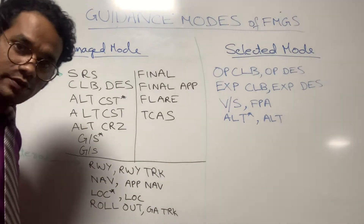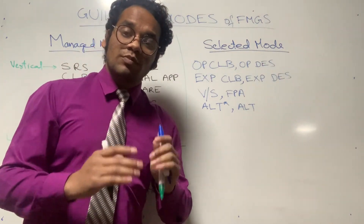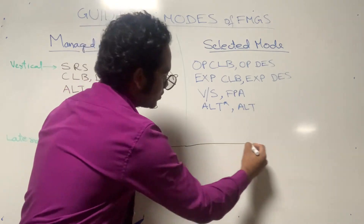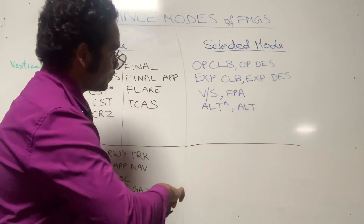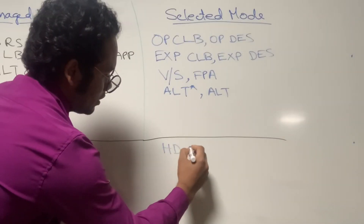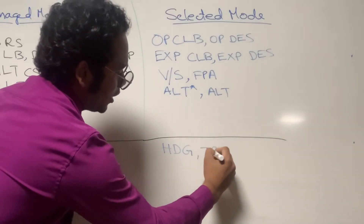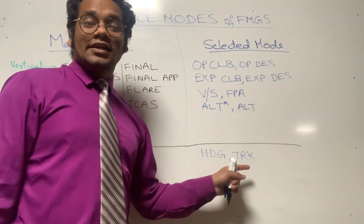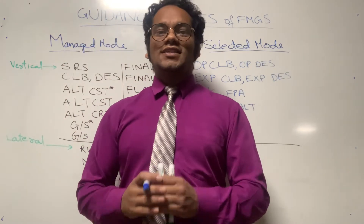And the Selected Mode FMAs for the Lateral Profile are: HDG (Heading) and TRK (Track). Only these two are the Selected Mode FMAs for the lateral profile.